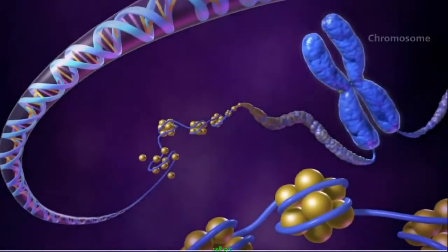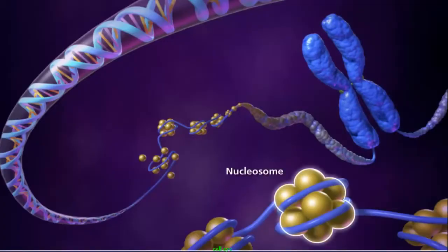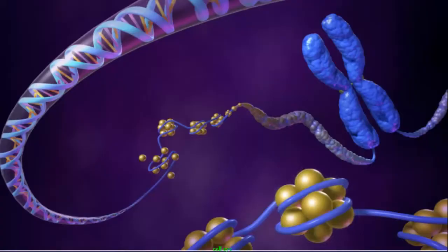Following DNA replication, the chromosomes condense in the nucleus of the cell. DNA condenses by wrapping around cores of histone proteins, forming nucleosomes. This beads-on-a-string structure is called chromatin.